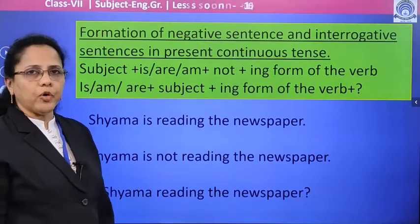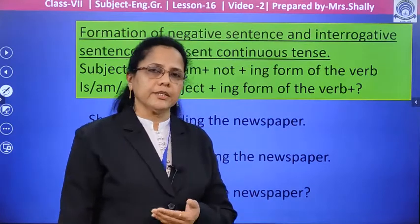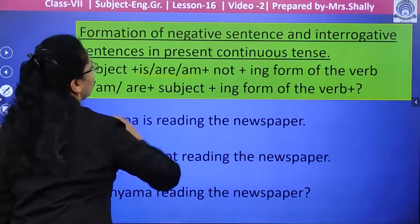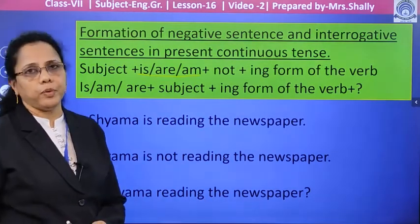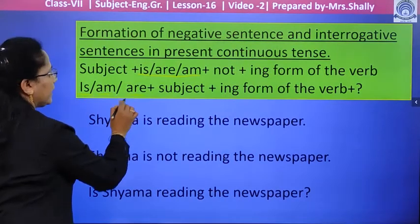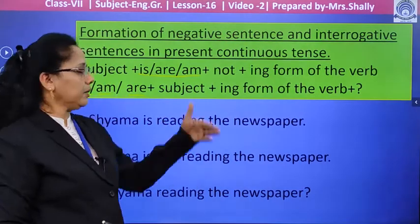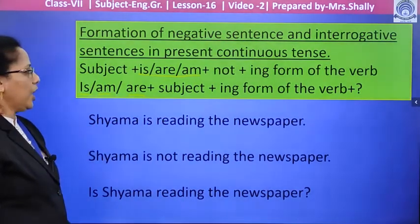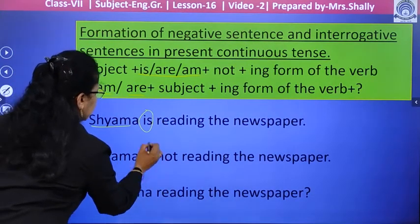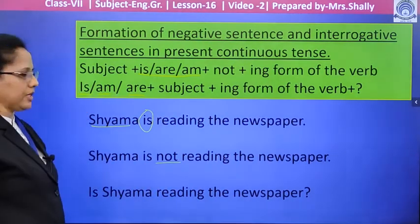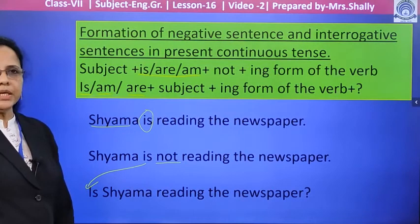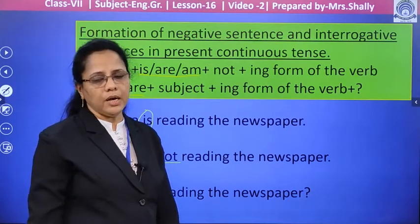Now let's see how to form a negative sentence and an interrogative sentence in present continuous tense. For a negative sentence: subject plus is/am/are plus not plus the ing form of the verb. For an interrogative sentence: place the helping verb is/am/are at the beginning, then subject, then ing form of the verb, then a question mark. For example: 'Shama is reading the newspaper.' Negative: 'Shama is not reading the newspaper.' Interrogative: 'Is Shama reading the newspaper?'